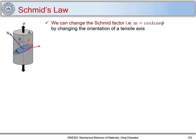We can change the Schmid factor by changing the orientation of the tensile axis — that is, by changing cos(phi) and cos(lambda). So we have the relation: tau_CRSS = sigma_y × cos(phi) × cos(lambda). When sigma reaches sigma_y, we write tau as tau_CRSS. Mathematically, cos(phi) and cos(lambda) can be changed by changing the orientation of the tensile axis. At yielding this equality must be satisfied.